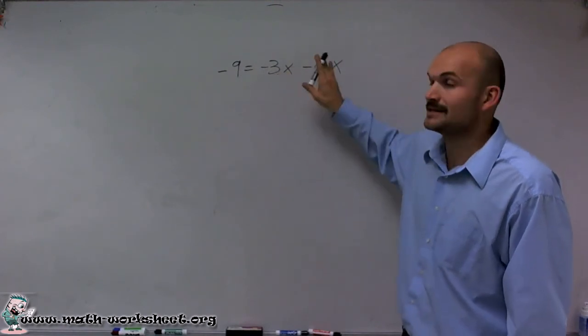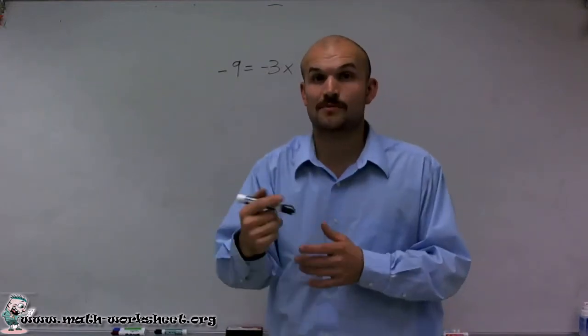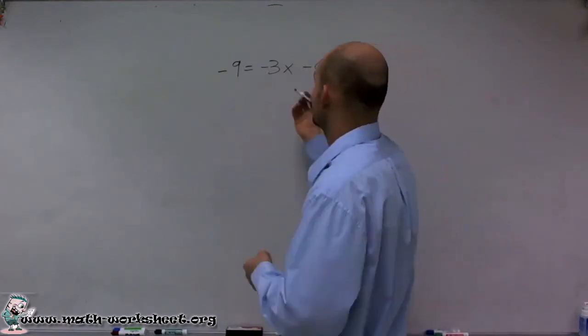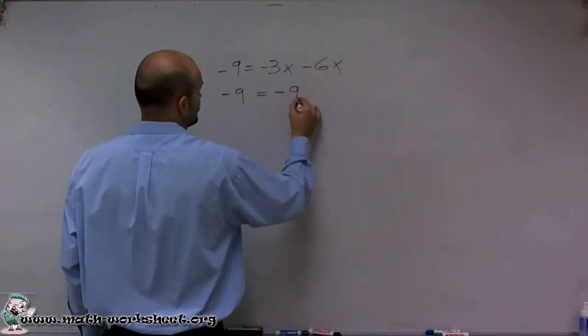Negative 3x minus 6x—if you owe $3 and you borrow six more, you're now going to owe $9. Therefore, I can say negative 9 equals negative 9x.